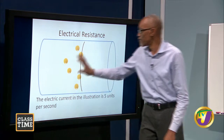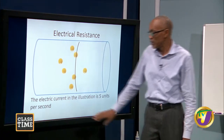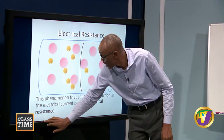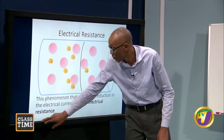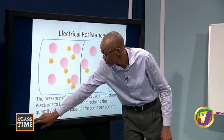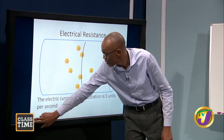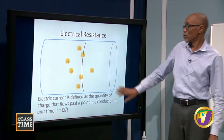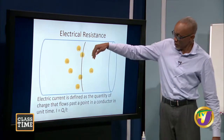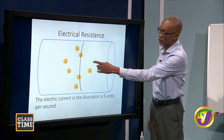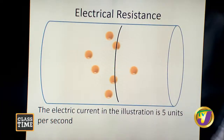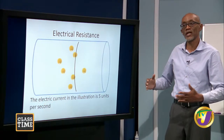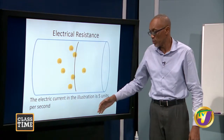If these charges are unimpeded, they will flow in this direction. We see about five of them passing this point in a unit time. These are just charges flowing unimpeded.